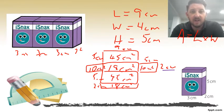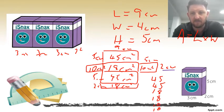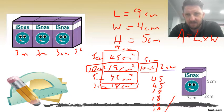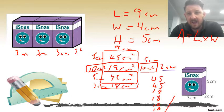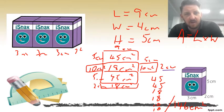All I have to do now is add up each of those different areas — that's the outside of my shape. So 45 plus 45 plus 18 plus 18 plus 10 plus 10. Forty-five plus 45 is 90, ten plus 10 is 20, that makes 110, add another 36, that makes 146 centimeters squared. So my surface area is 146 centimeters squared.